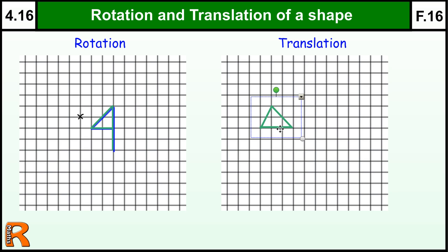Now, obviously in mathematics we need to be a bit more precise, so we tend to use things called vectors to describe a translation. And that vector is in two parts. We've got the across part, and we've got the up and down part. So if I'm going over to the right, that's a positive value.